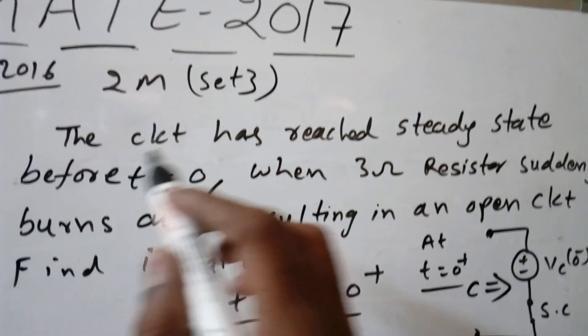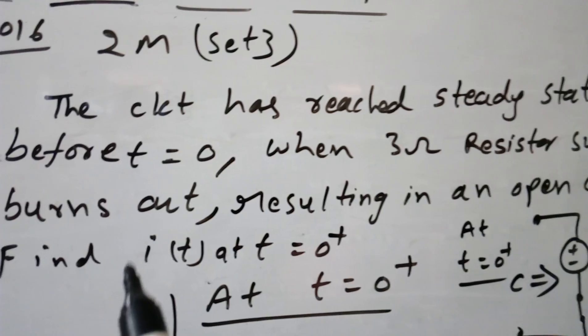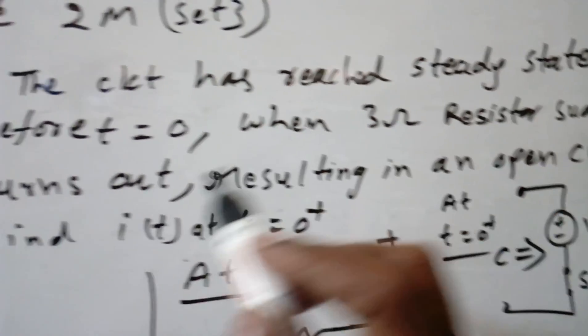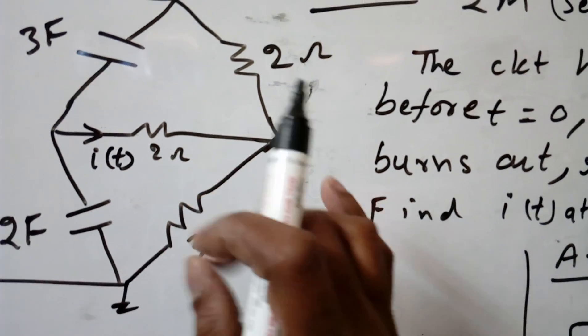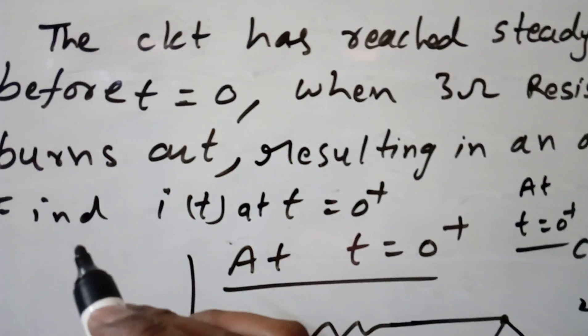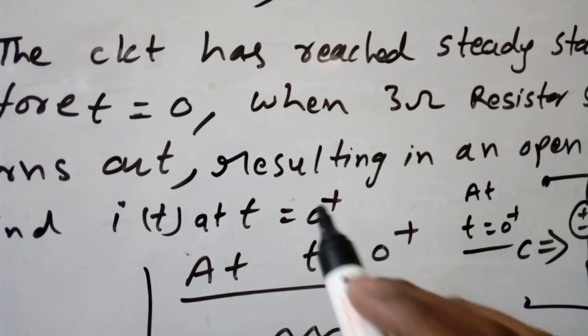So he mentioned the circuit has reached its steady state before T equal to 0. But at T equal to 0, when the 3 ohm resistor suddenly burns out, this 3 ohm resistor suddenly burns out, so that means it is becoming open circuit, resulting in an open circuit. Find I(t) for T equal to 0 plus.